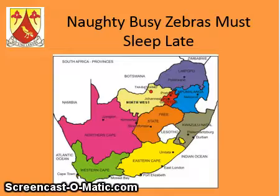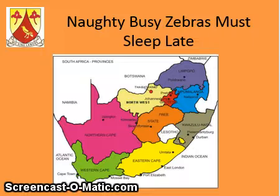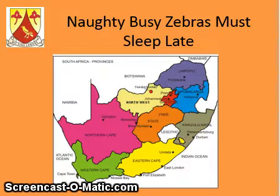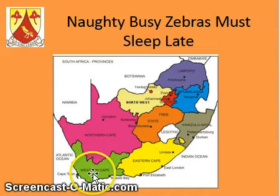And then you need to know each of the nine provinces, and you also need to know the capital city. Now, this map isn't 100% correct — it's quite an old map, but let's have a look at it quickly. We've got the Western Cape; this is where we live, and we live in a capital city which is Cape Town.